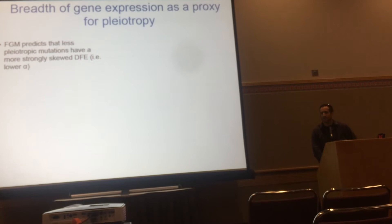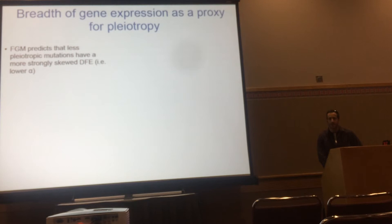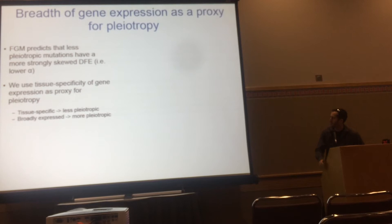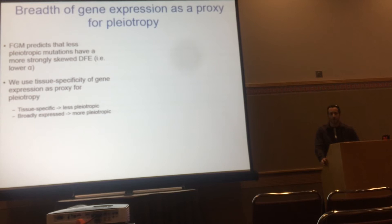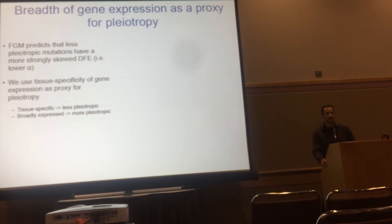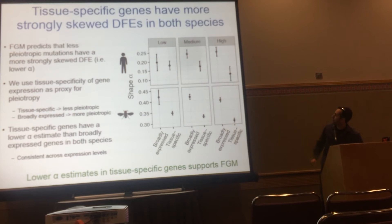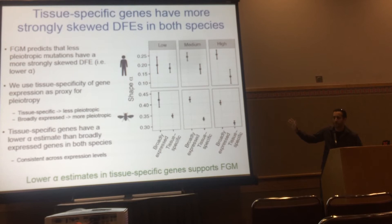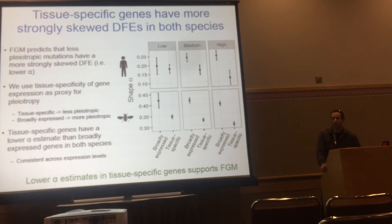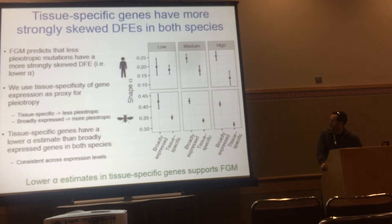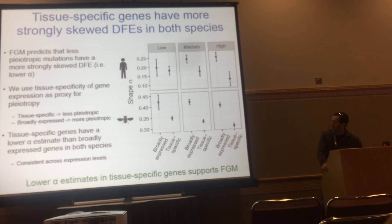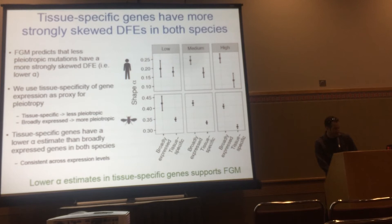Measuring pleiotropy systematically is difficult, so we used gene expression breadth as a proxy — assuming genes with tissue-specific expression patterns are less pleiotropic than broadly expressed genes. We classified genes by expression pattern and estimated the DFE for each category. Each row shows a different species, columns refer to overall expression levels, and I'm showing the shape parameter of the gamma distribution, where a lower shape parameter means a more skewed distribution. Tissue-specific genes — those we consider less pleiotropic — do indeed have a lower shape parameter, consistent with Fisher's geometric model prediction.